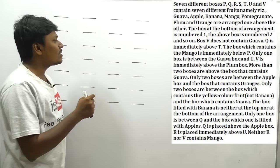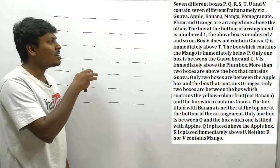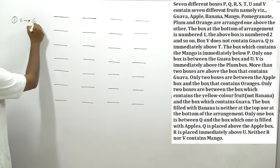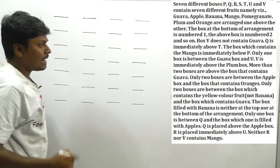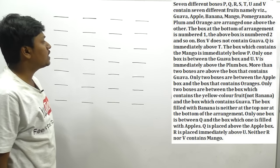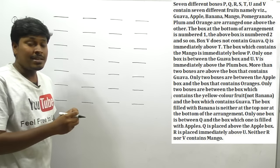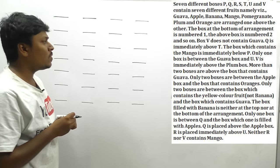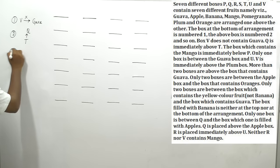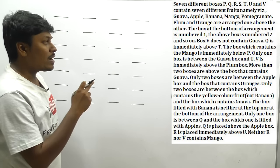Clue 1: V does not contain guava — note this as 'V ≠ guava'. Clue 2: Q is immediately above T — so above T, Q should come. Clue 3: The box which contains mango is immediately below P — so below P, mango should come. These are not direct placement clues, so take note of each one carefully.